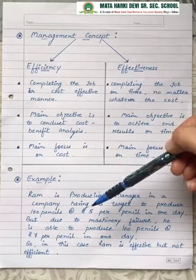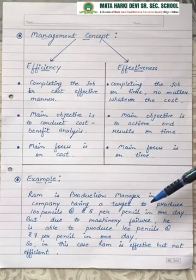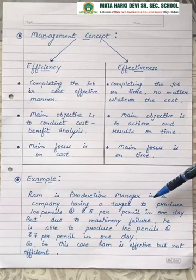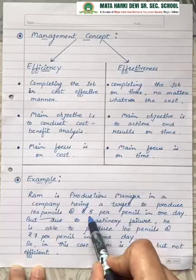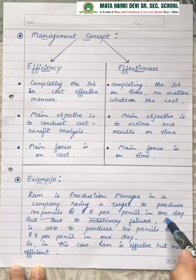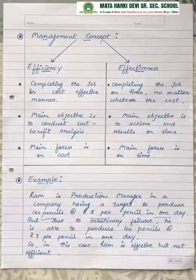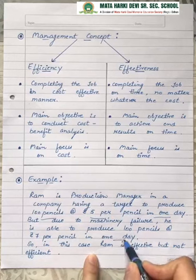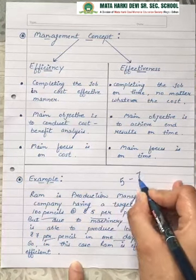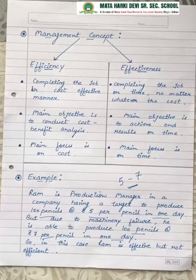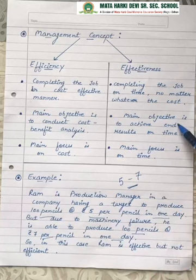Let's understand these two concepts with an example. Suppose Ram is a production manager in a company. The target is to produce 100 pencils at a cost of ₹5 per pencil in one day. But because of a machinery failure, he produces 100 pencils in one day but at a cost of ₹7 per pencil. In this case, Ram is effective but not efficient. Why effective? Because the work was completed on time — it was one day and he completed his production target.